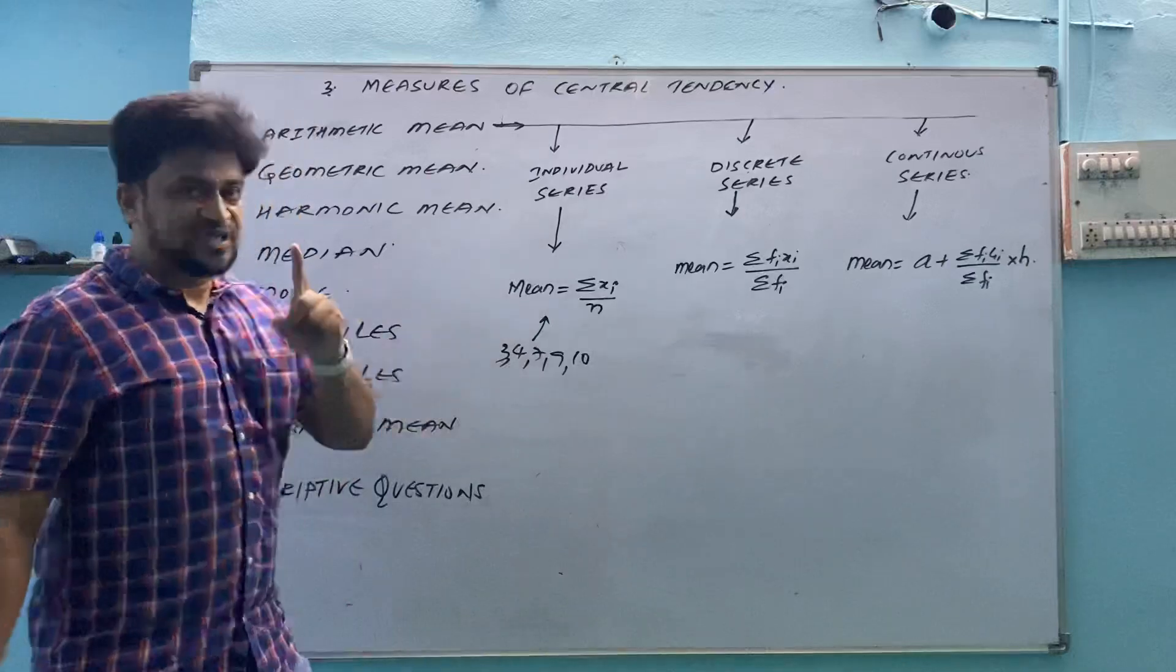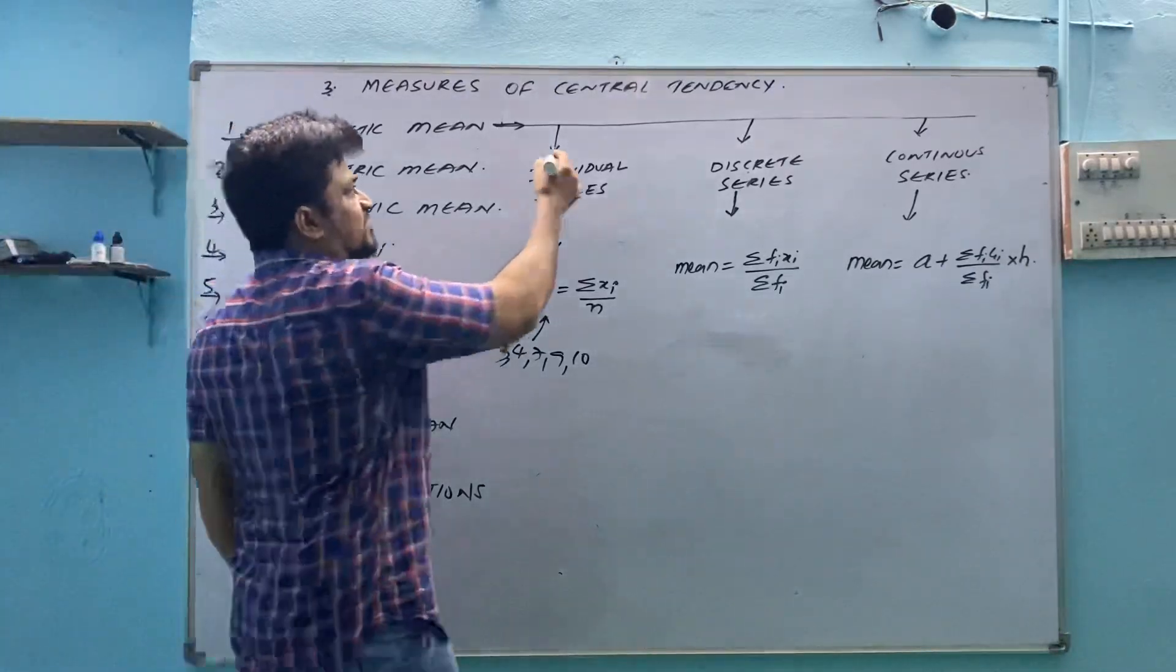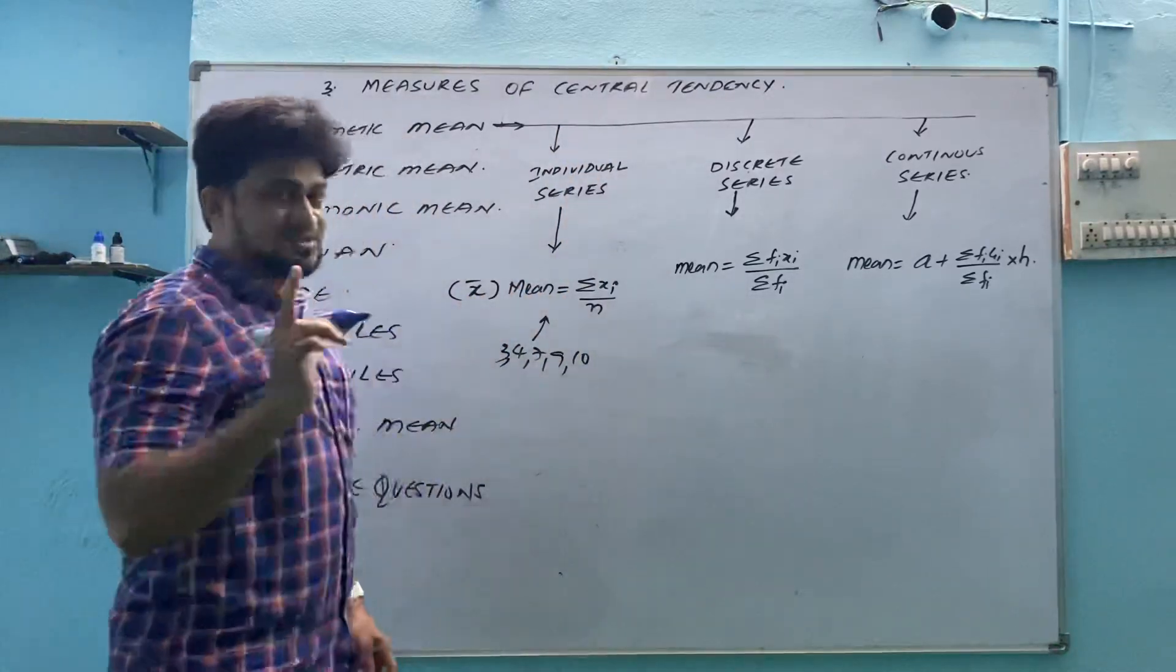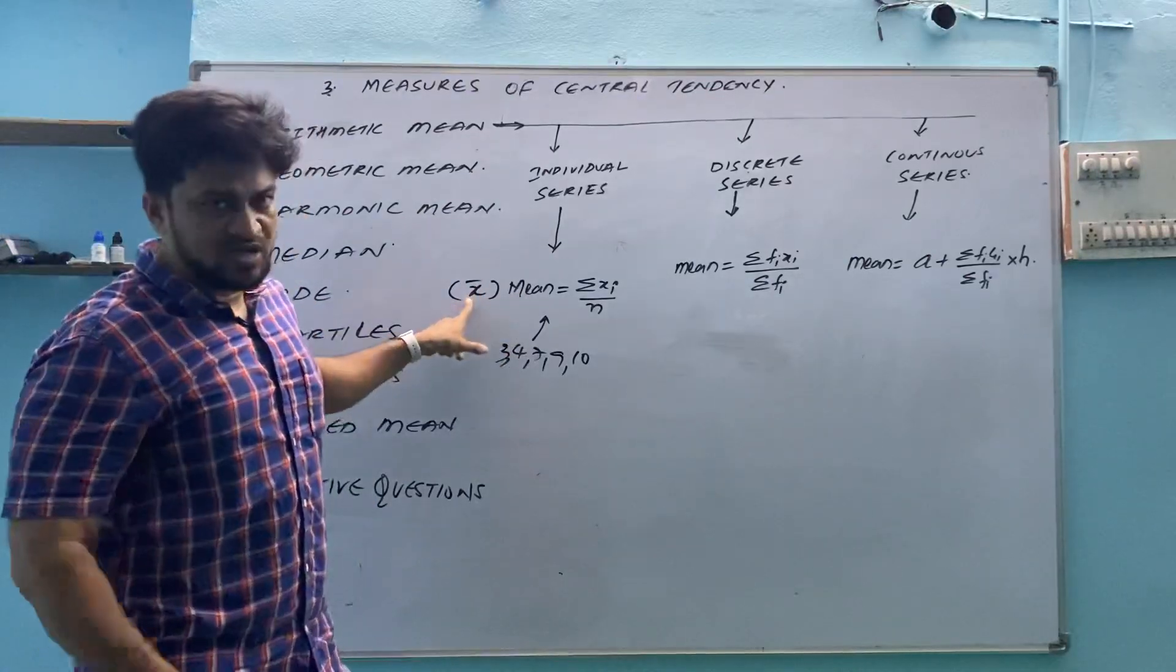In this mean, mean is also known as arithmetic mean. And we can also say x bar. Mean is represented by x bar. So these 3 names are there for arithmetic mean: AM or mean or x bar.